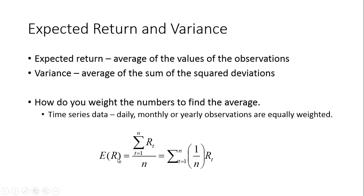So the expected return here would be: take all the return numbers and add them up. That's what this sigma from t equals 1 to n stands for. Sum up r1 plus r2 plus r3 all the way out to rn, n being the last observation, and then divide by the number of observations. That's how we're used to doing average calculations. If we wanted to know the average weight of students in a classroom, we take everybody's weight, add it up, and divide by the number of students.